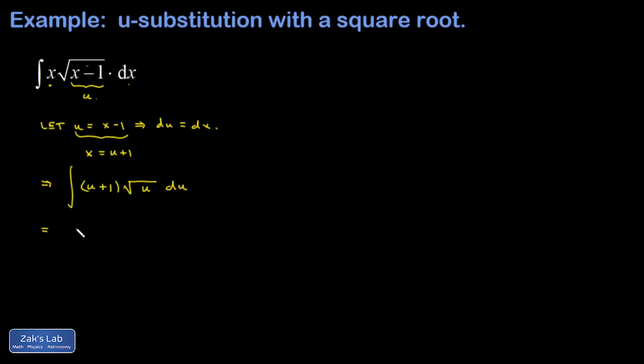I think of square root of u as u to the one half, and I distribute that, and this gives me u to the three halves, just adding the exponents there, plus u to the one half du. And I use the power rule on each of these terms. I add one to the exponent and divide by the resulting number.